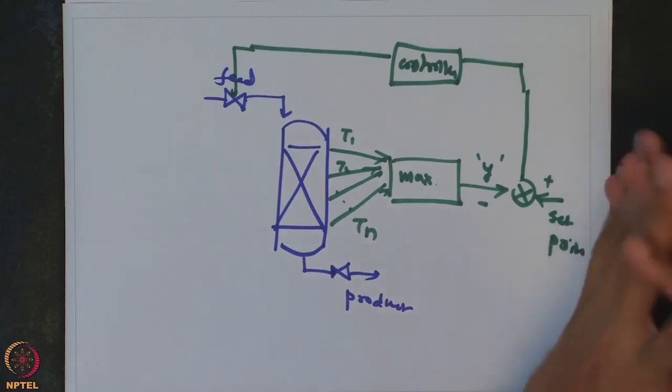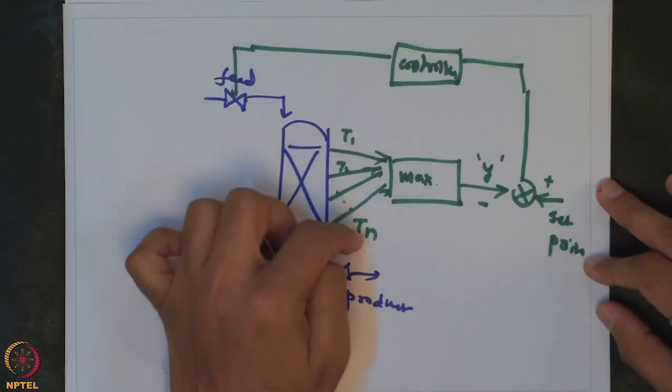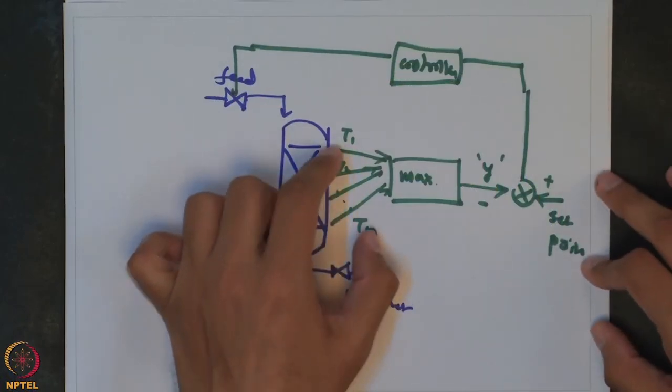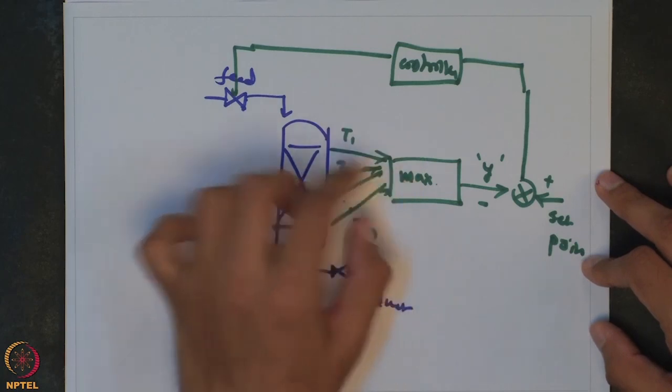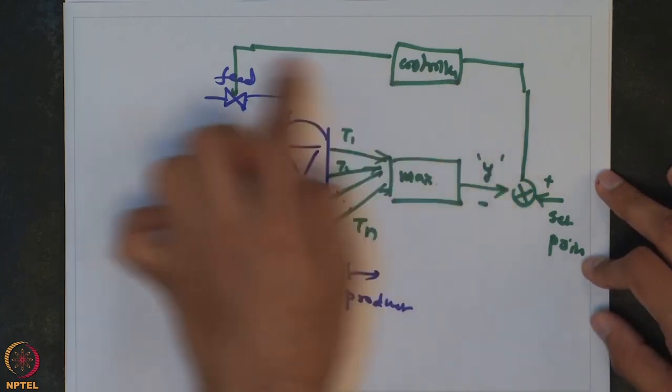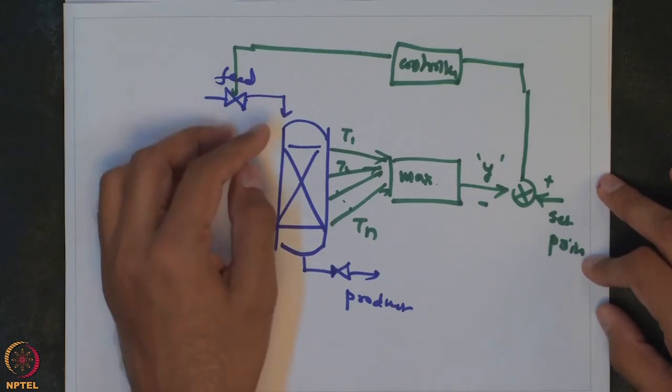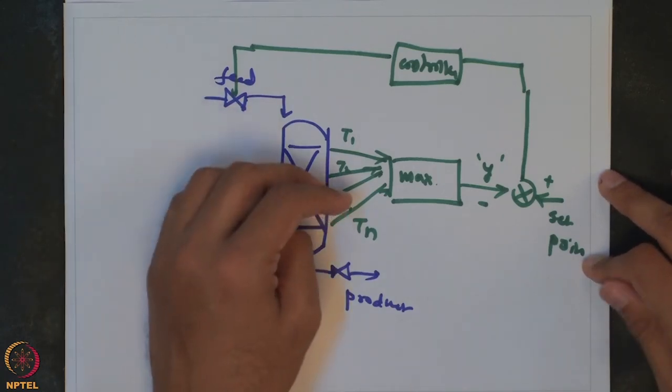This is an example of auctioneering control: we are using multiple measurements, but for each of those measurements we do not have a control loop. We select whichever is the critical measurement rather than a control loop and then take control action accordingly. That is the main difference between override control and auctioneering control, but both fall under selective control because we are selecting out of multiple possible control variables or measurements. This kind of strategy is very commonly used to control hot spot temperature in a fixed bed catalytic reactor.